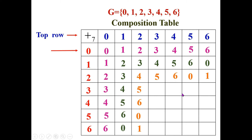Now filling the fourth row headed by number 3. 3+3=6. For 3+4=7: when 7 is divided by 7, the remainder is 0. For 3+5=8: when 8 is divided by 7, the remainder is 1. For 3+6=9: when 9 is divided by 7, the remainder is 2. Having filled the fourth row, we fill the fourth column — only 3 elements are left: 0, 1, and 2.